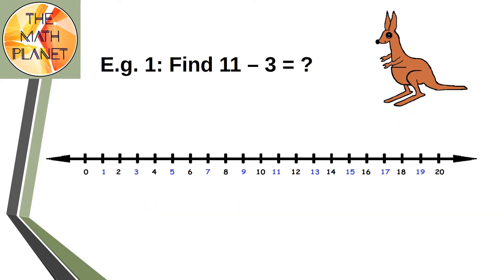For example, if I need to find the difference between 11 and 3, I'll start at 11 and jump 3 steps backwards on the number line. So here's 11, minus 1, 2, 3 steps, and the destination is 8, which is the difference.